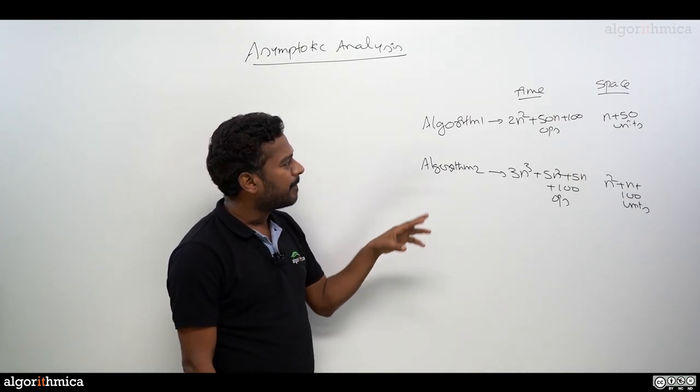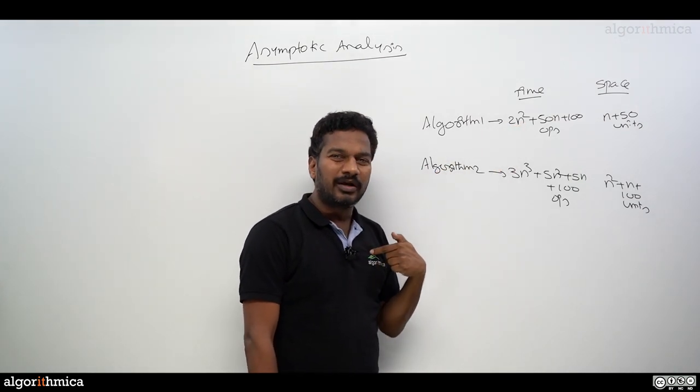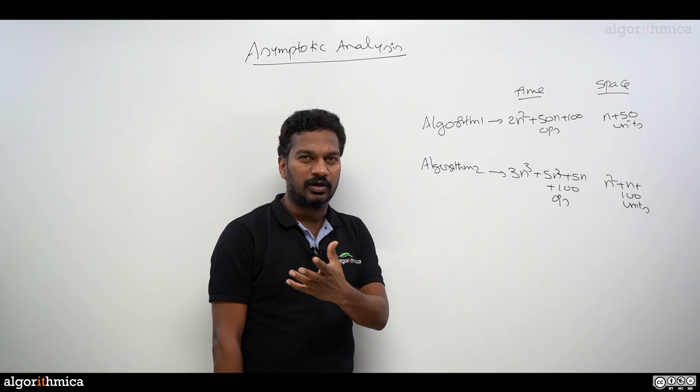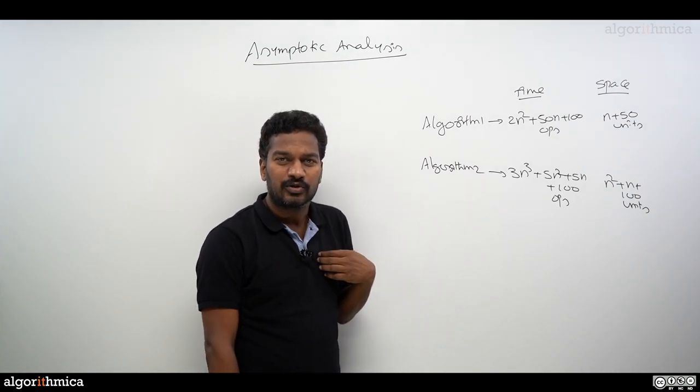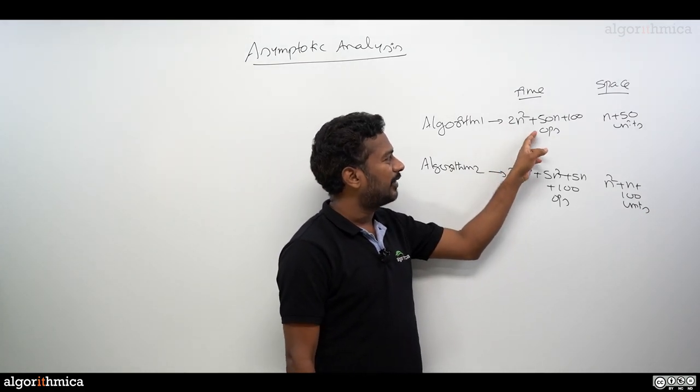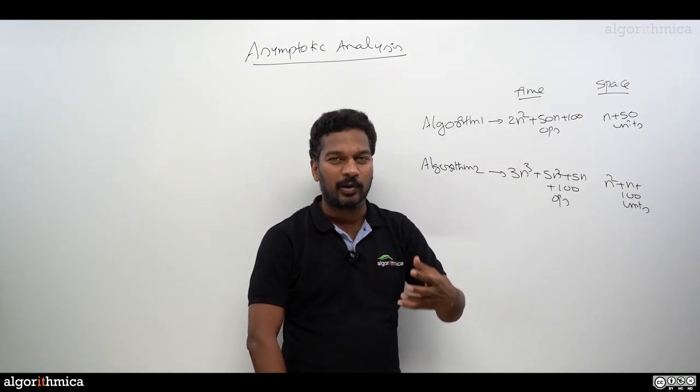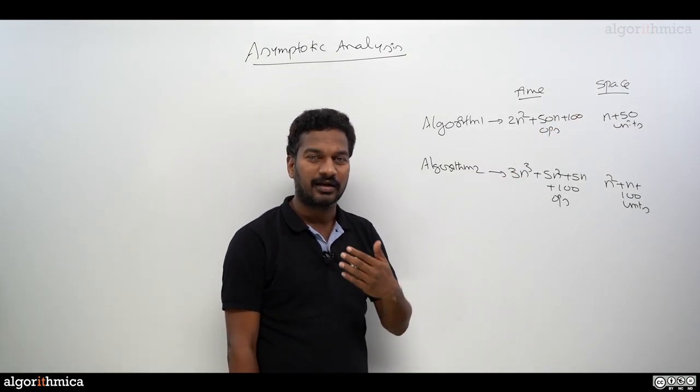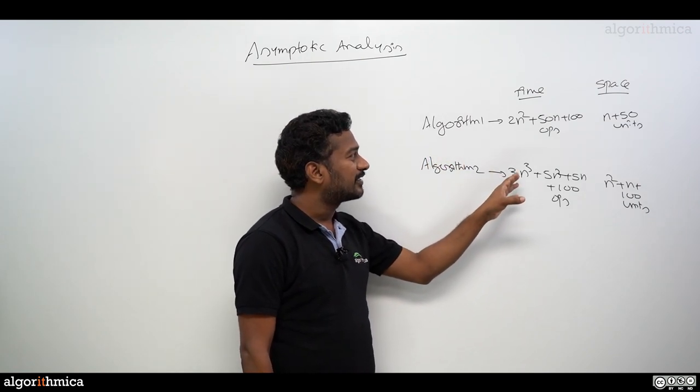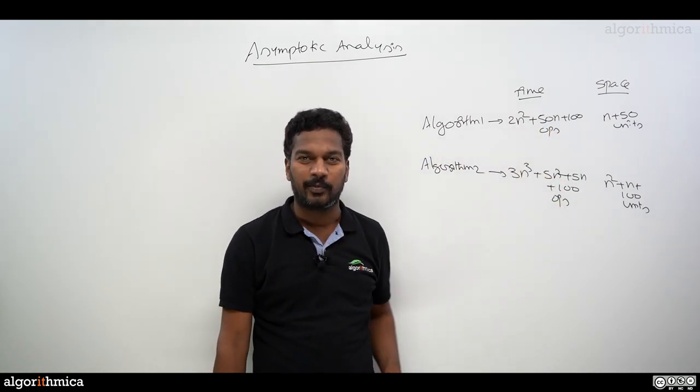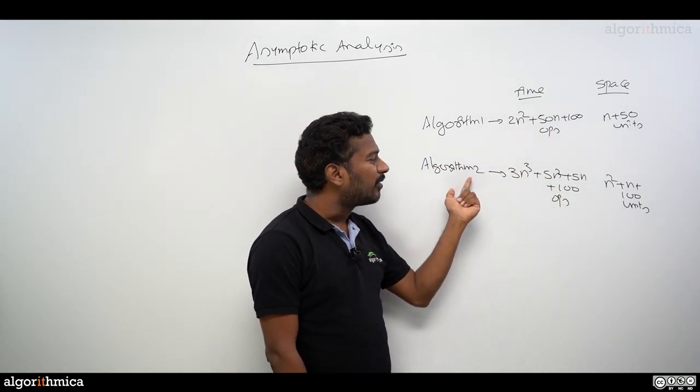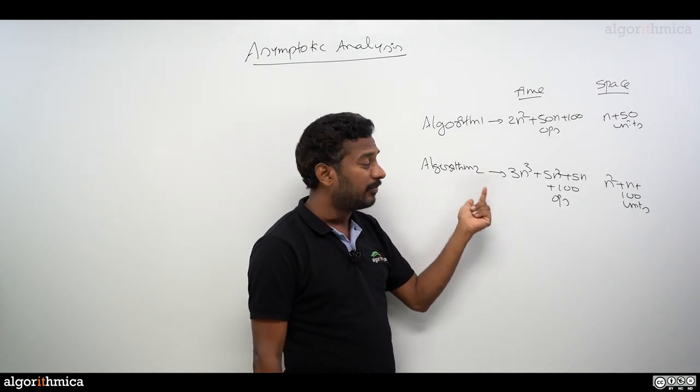We do this because we want to filter out useless algorithms before going for coding. But if you want to communicate this kind of functions to other people in the community, how do I communicate? Should I tell that my algorithm takes 2n² + 50n + 100 operations? The other guy will say that my algorithm takes 5n² + 100n + 200 operations.